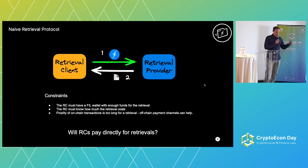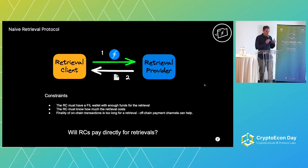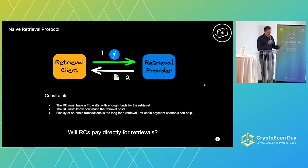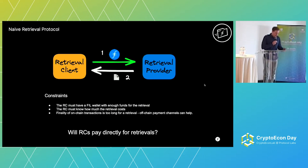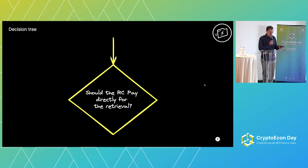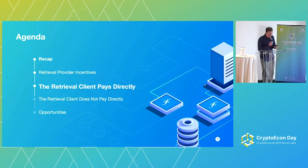Aside from the technical things we can improve, there's an initial product question: will retrieval clients actually pay directly for retrievals? Whenever we use our browsers, we don't pay to retrieve files or fetch websites. The Web2 business model is not predicated on paying microtransactions for every single file retrieval. So I've started this decision tree, which we're going to build throughout this talk. The first question we ask is: should the retrieval client pay directly for the retrieval?